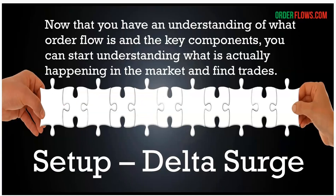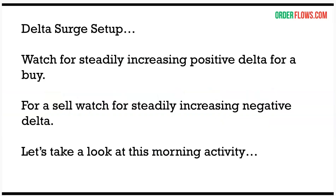The setup I want to share is the Delta Surge. On my website I have an indicator created for it. Basically, what goes into it: you're watching for steadily increasing positive delta for a buy signal — over four bars. The first bar for a buy would have negative delta, then a positive delta in the second bar, the third bar slightly stronger positive, and the fourth bar the strongest. For a sell, it starts with positive delta, then smaller negative delta, slightly bigger negative delta, and even bigger negative delta.